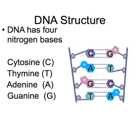What you are looking at here in this picture are four rungs of a DNA ladder, consisting of millions or tens of millions of rungs in one strand of DNA.